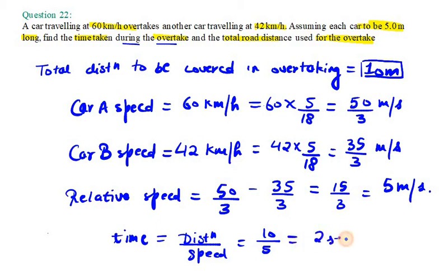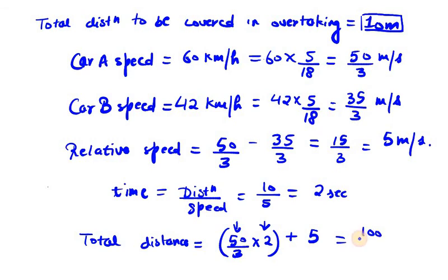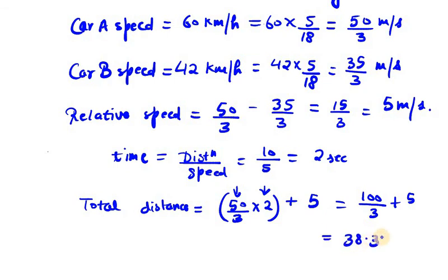Now in the second part we need to find the total road distance used for the overtake. So total distance will be the distance covered by car A in overtaking. It will be 50 over 3 into 2. This is car A speed into time, which gives us the distance traveled. From the first value we get 100 over 3, and plus 5 here. So when we add this we get 38.3 meters.